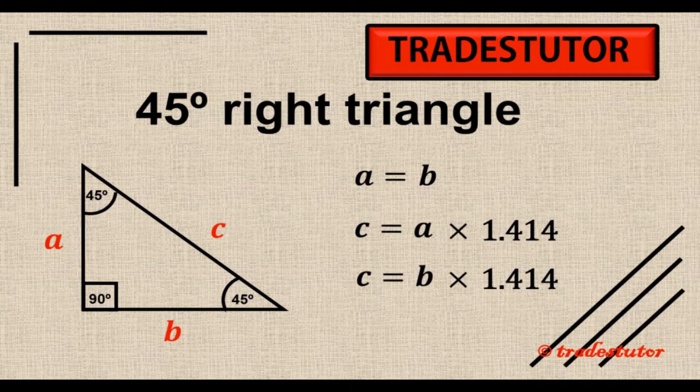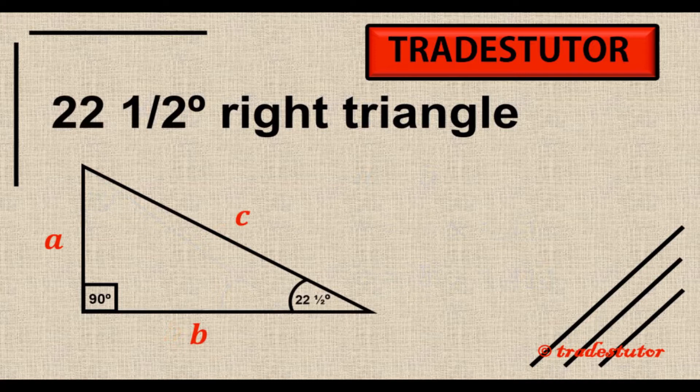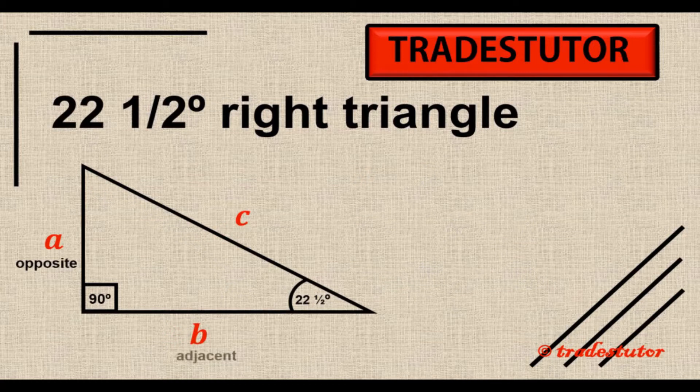Now the second version, the second specific example, is a 22 and a half degree right triangle. And now I'm going to go back to the names of the original names. So we see the 22 and a half degree angle down there, so a becomes the opposite, b becomes the adjacent, and c becomes the hypotenuse.